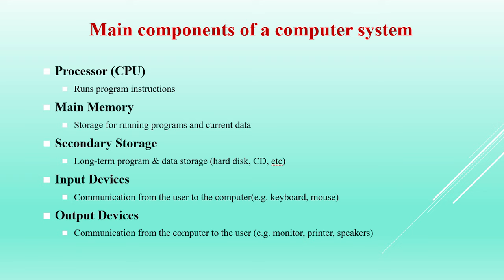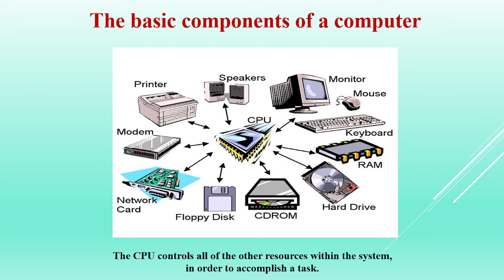Now let's talk about the central processing unit. The logic unit performs calculations and makes decisions. The control unit coordinates processing steps. Registers are small storage areas used for instructions and data.